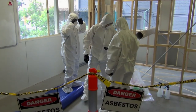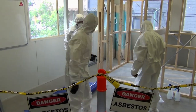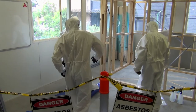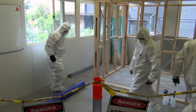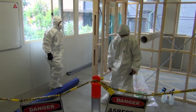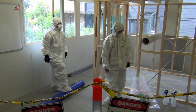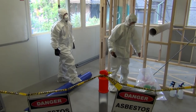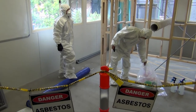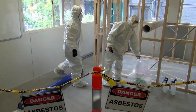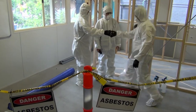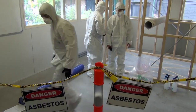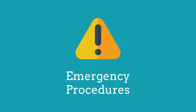The removal of any asbestos — including low-risk materials such as roofing felts, old floor tiles, textured paints and plasters containing asbestos — can be hazardous. Be aware of asbestos-containing materials that have been painted using lead-based paint, as this could be a double hazard.